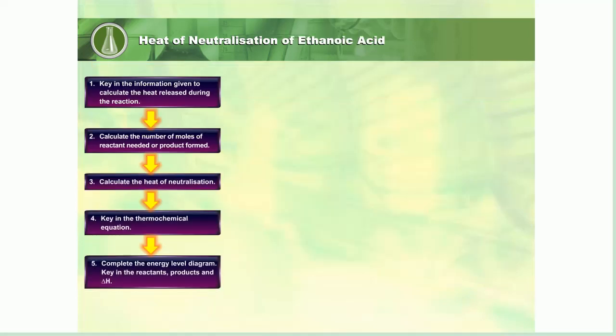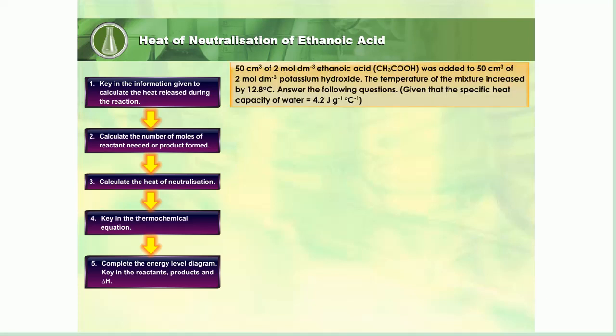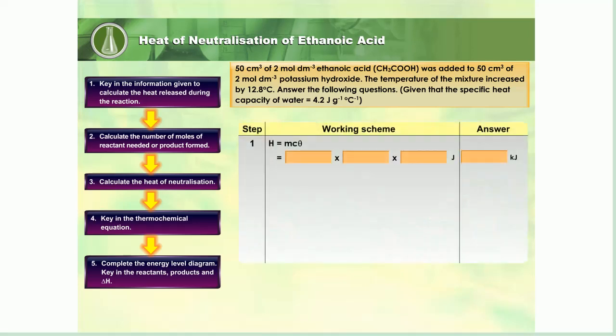Study the flowchart and use it to guide you when solving problems involving heat of neutralization. 50 cm³ of 2 mol per cubic decimeter ethanoic acid (CH₃COOH) was added to 50 cm³ of 2 mol per cubic decimeter potassium hydroxide. The temperature of the mixture increased by 12.8 degrees Celsius. Answer the following questions and key in your answers in the boxes provided.